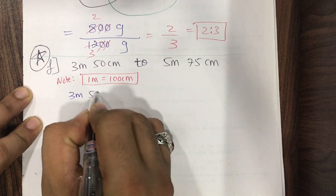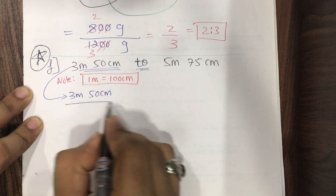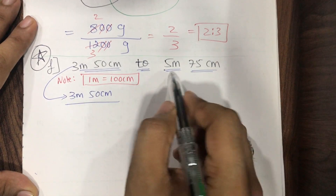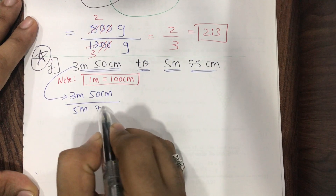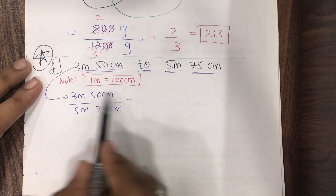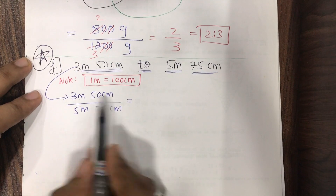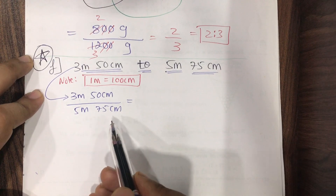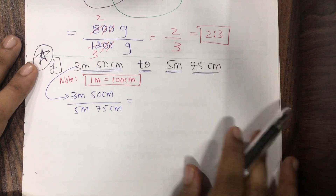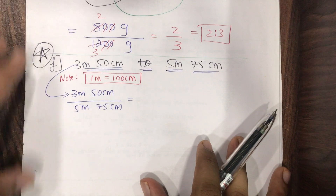The question: 3 meters 50 centimeters to 5 meters 75 centimeters. I write: 3 m 50 cm upon 5 m 75 cm. The basic principle: numerator and denominator must have the same units throughout. Here we have meters and centimeters in both numerator and denominator, so we must convert. Should we go to meters or centimeters? Always convert to the lowest unit — centimeters.